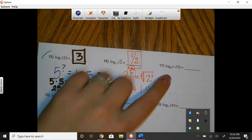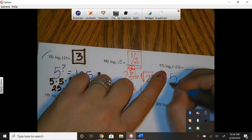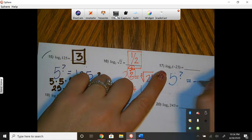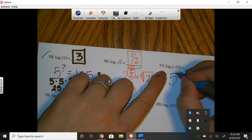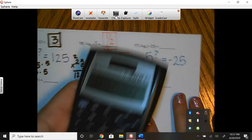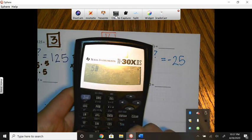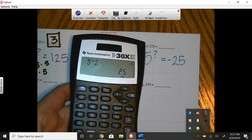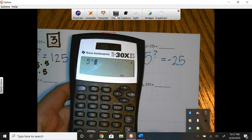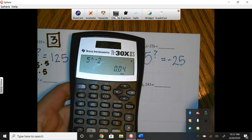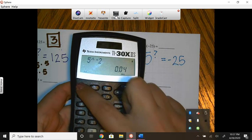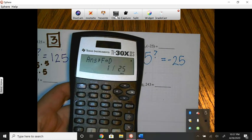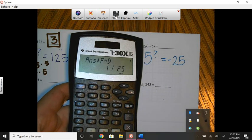Let's go ahead and take a look at this one. This is saying 5 to what power is negative 25? 5 to what power is negative 25? So 5 to the second power, that wouldn't work. That's 25. 5 to the negative second power, that wouldn't work. Right? That's a decimal. That's 1 25th. So negatives don't work.